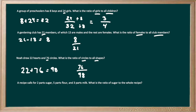76 over 98 can be reduced down if we divide the top and the bottom by 2. 76 divided by 2 is 38 and 98 divided by 2 is 49. So our final reduced part-to-whole ratio is 38 over 49.